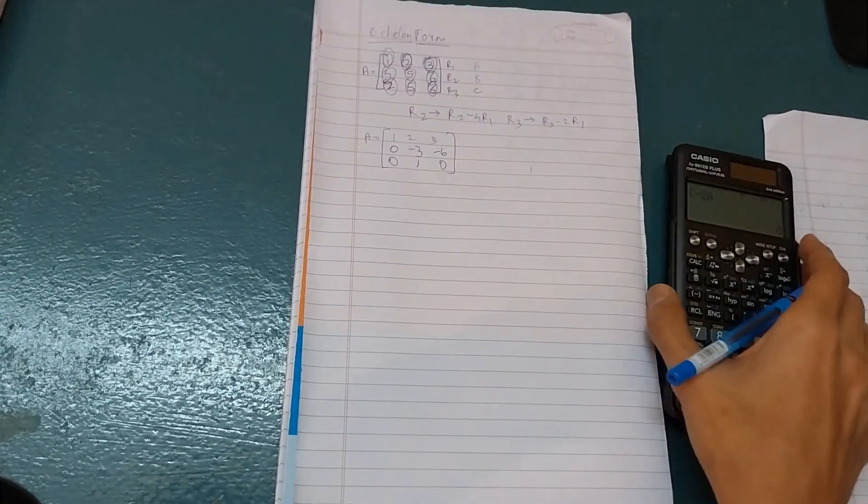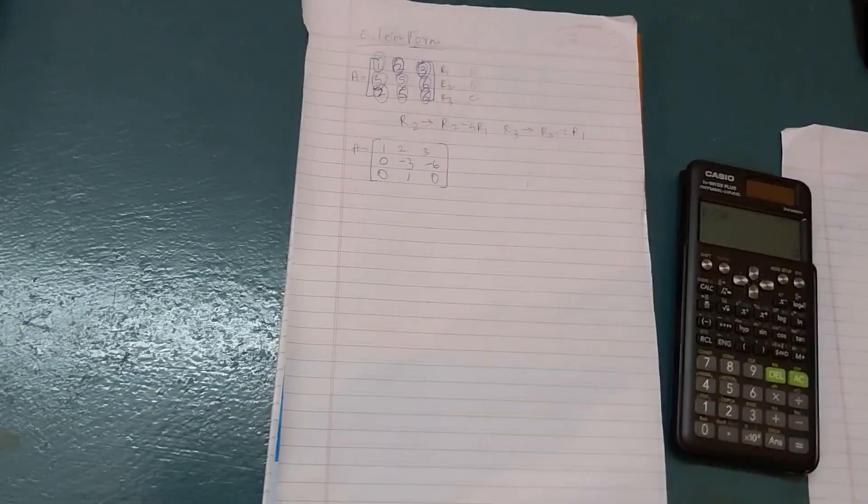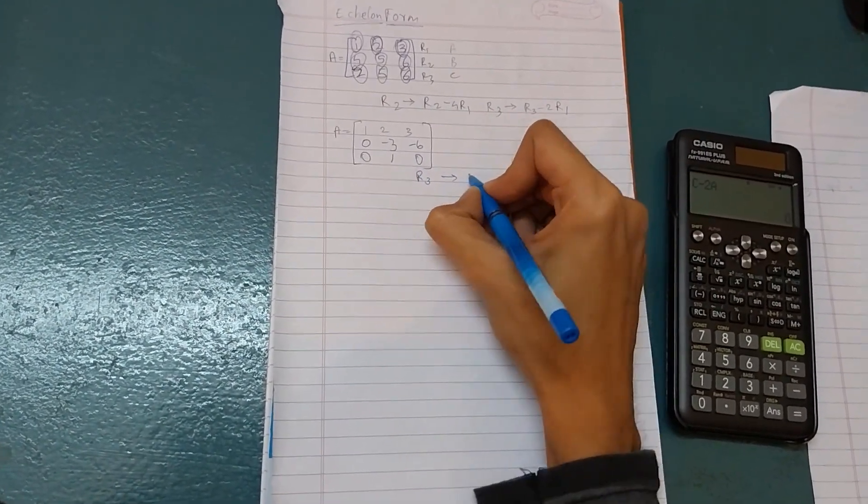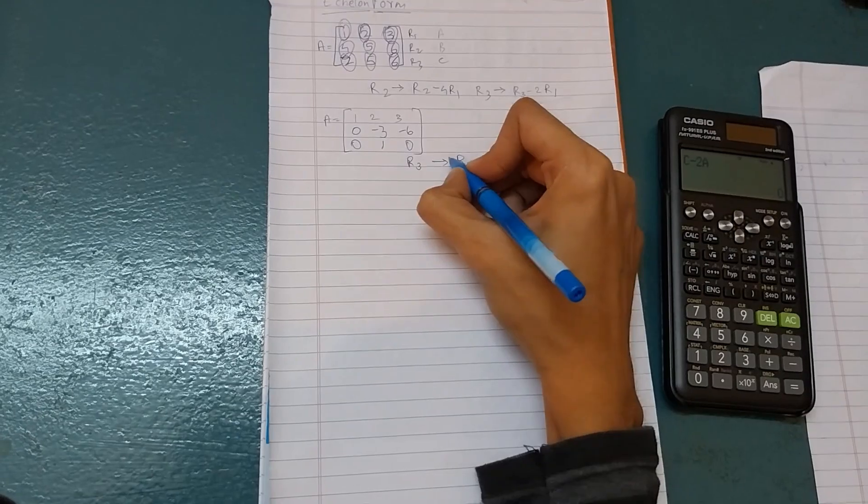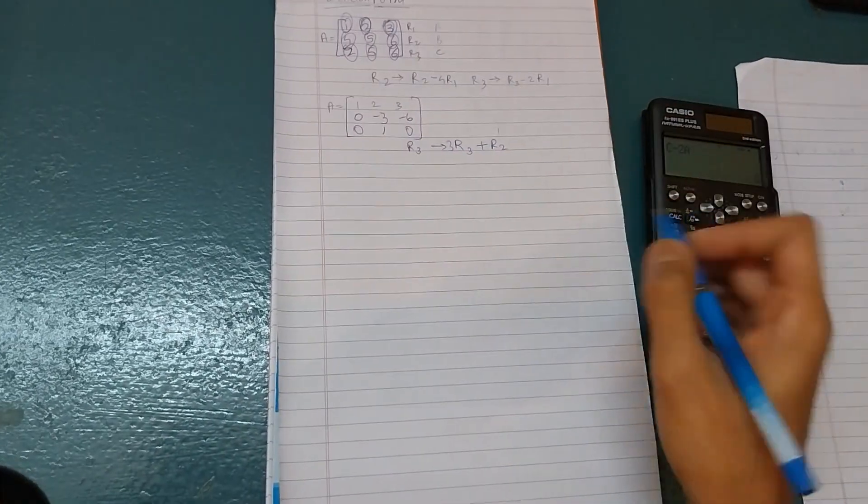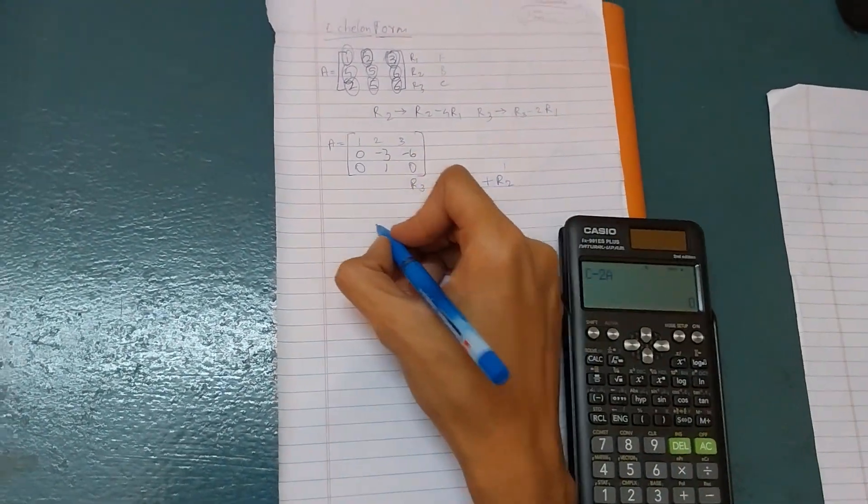Now let us write another row transformation equation: R3 equals 3R3 plus R2. So now use the calculator.